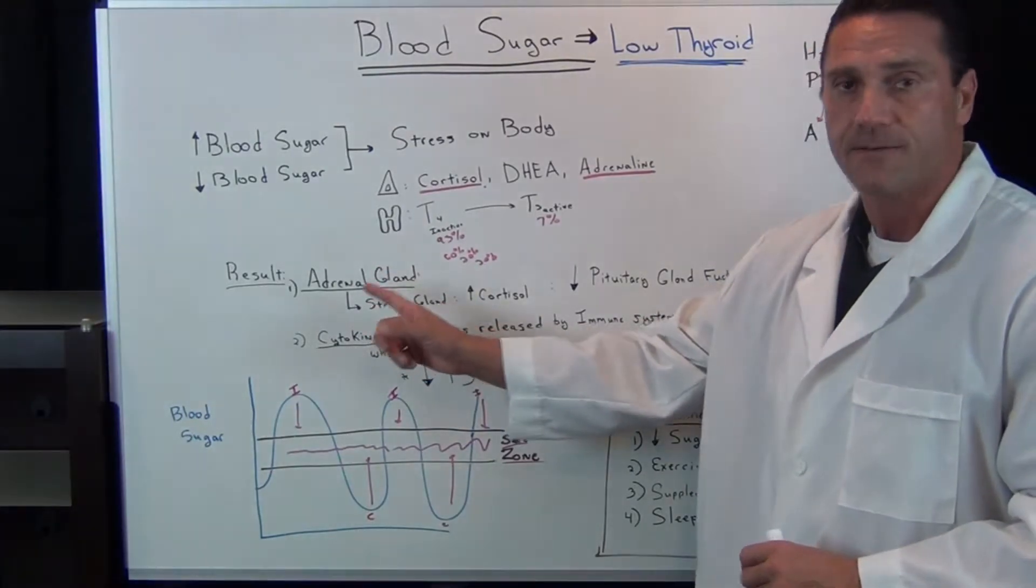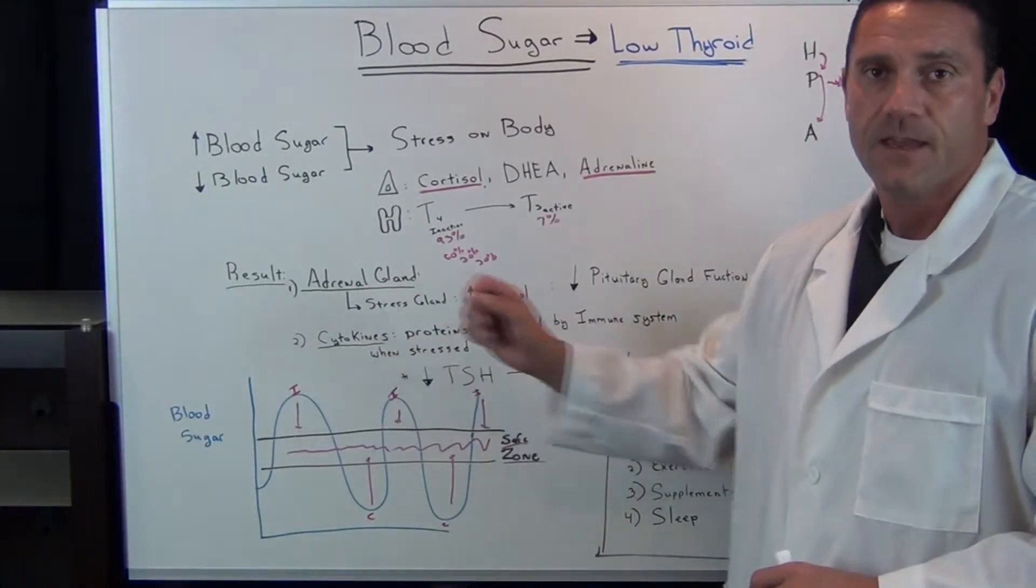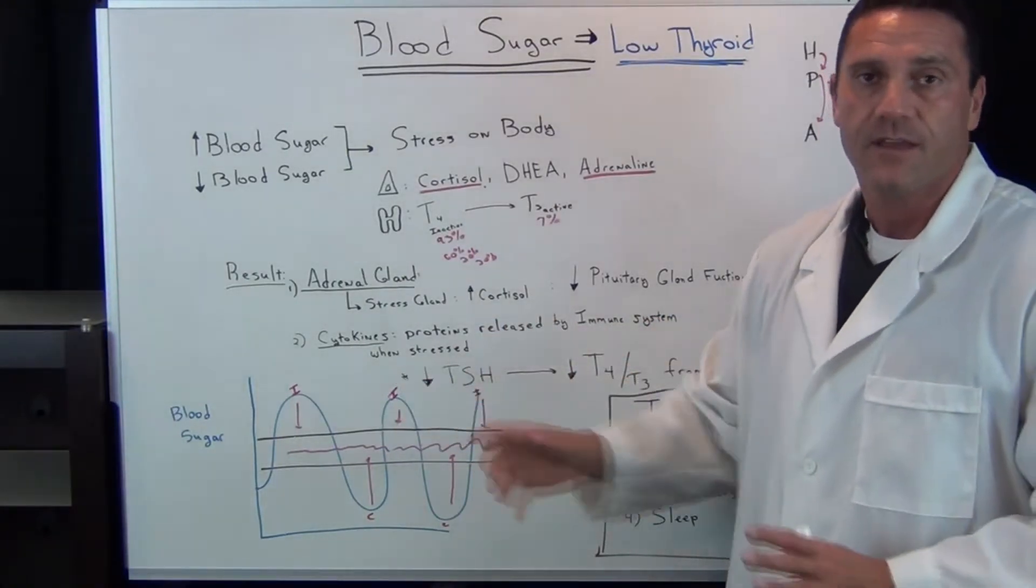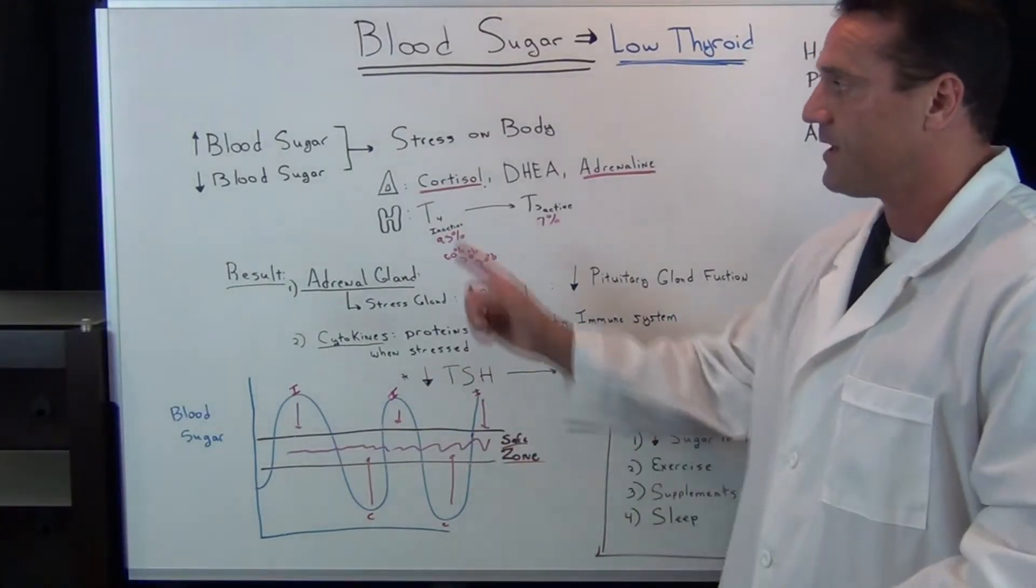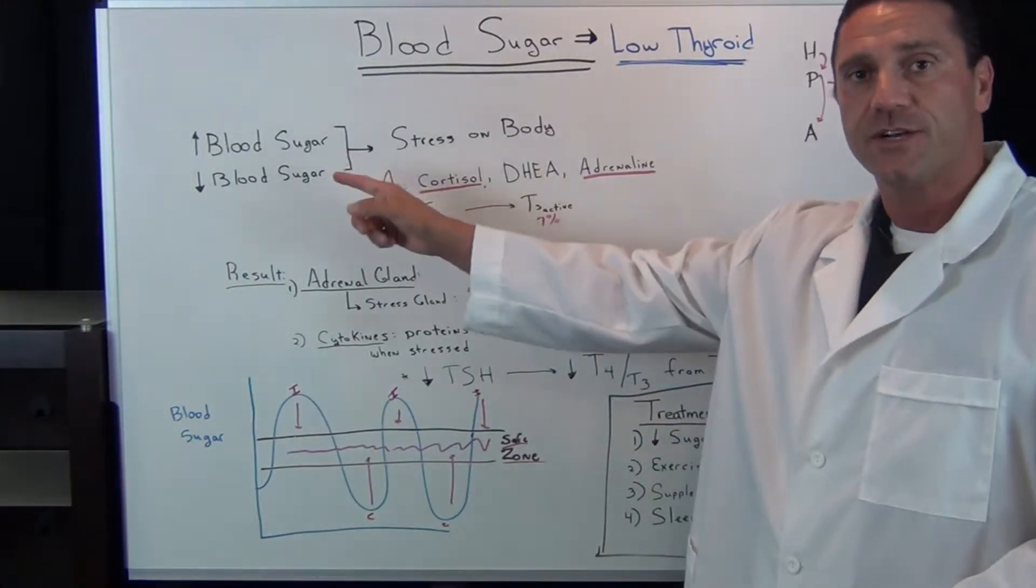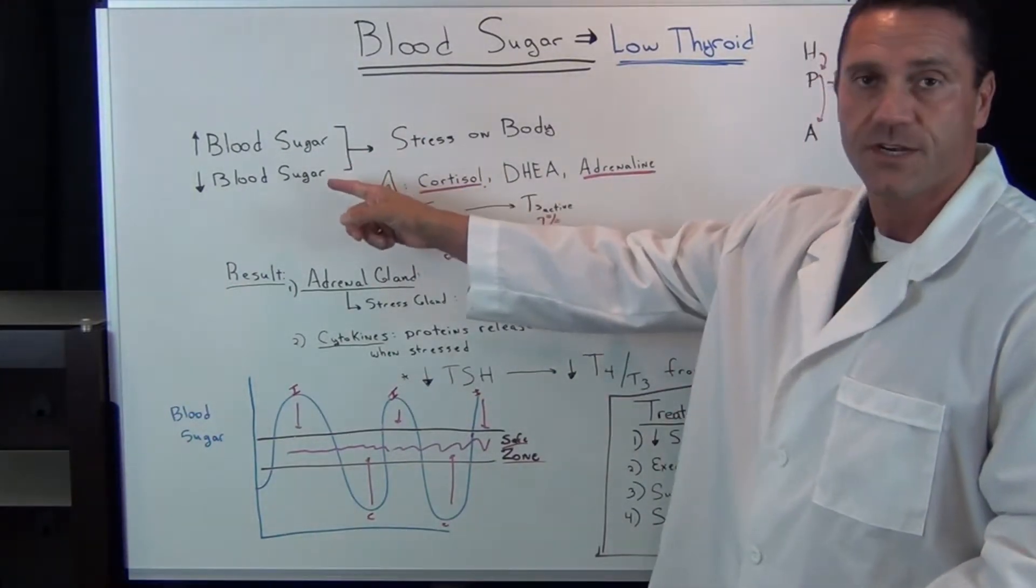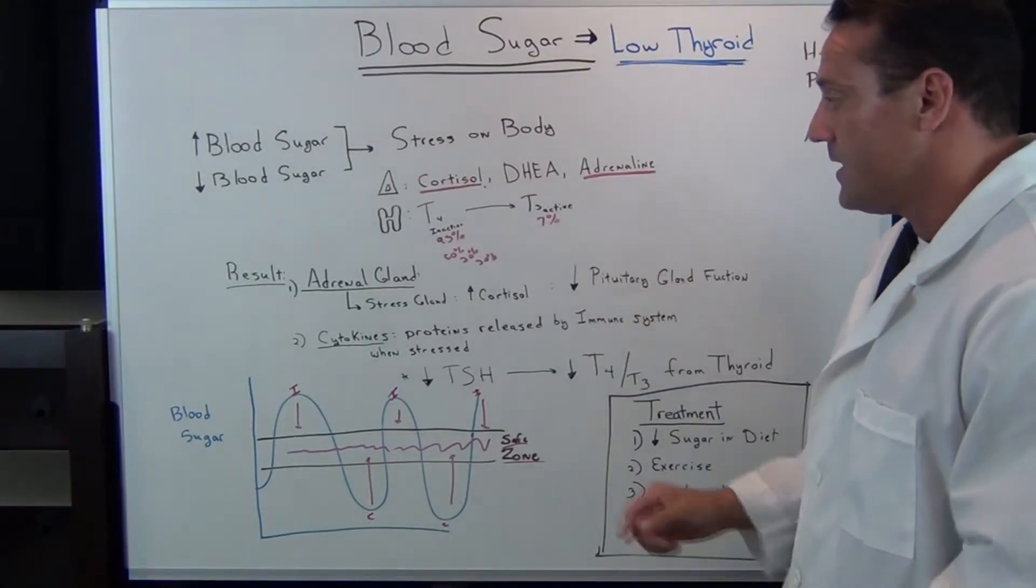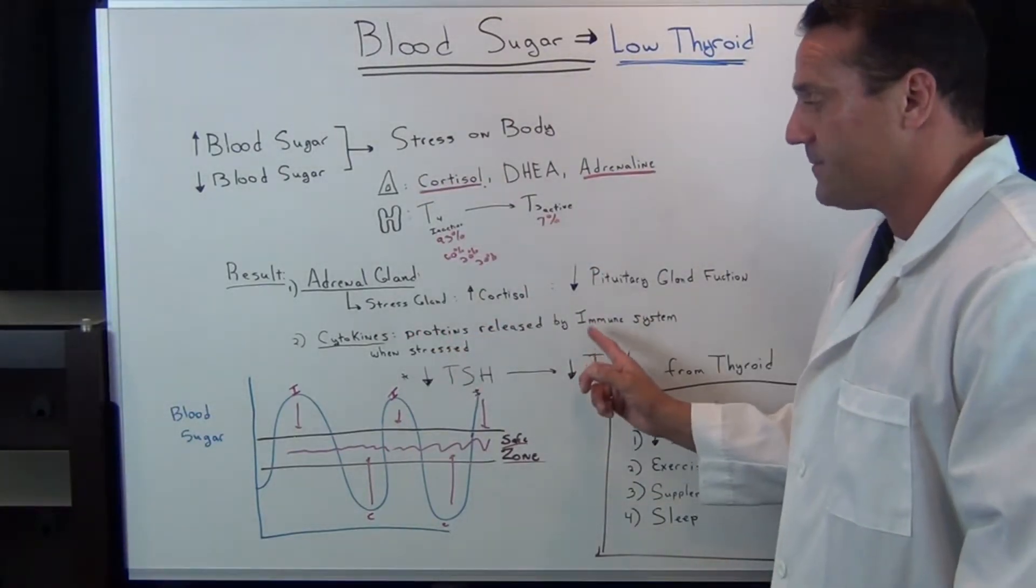When there's too much stress, we release a protein called cytokines. Cytokines is a protein released by the immune system when we're stressed out. In this particular example, I'm talking about the fluctuations of blood sugar, because when we have fluctuations of blood sugar in our body, it causes tremendous stress.